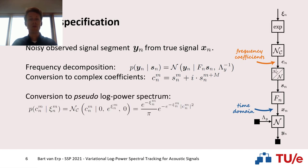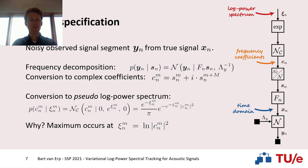Next is the conversion to the log power spectrum, and for this purpose we will use a so-called Gaussian scale model. Here, our complex frequency coefficients c(n) will be modeled through a complex normal distribution with zero mean, whose covariance is the exponentiated variable psi. Why can we do this? Because if we take the maximum of this log likelihood, we see that it occurs when psi equals the logarithm of the squared magnitude of c(n), which coincides with the deterministic transform from the complex frequency coefficients to the log power spectrum.